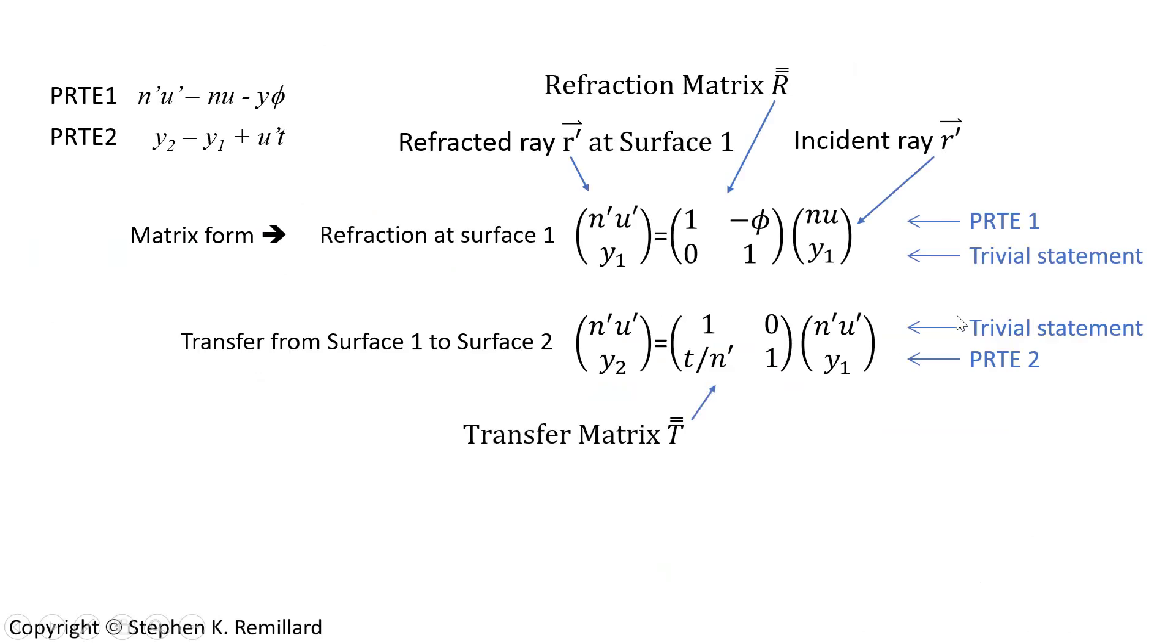The top row of this equation is the trivial statement that n prime u prime equals n prime u prime, but if you look at the bottom row, you'll see that you have paraxial ray trace equation number two. y2 equals u prime t plus y1.